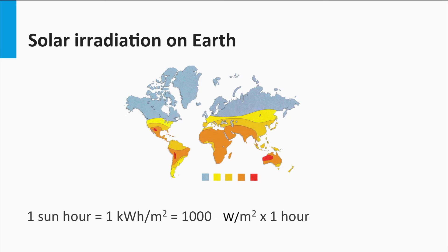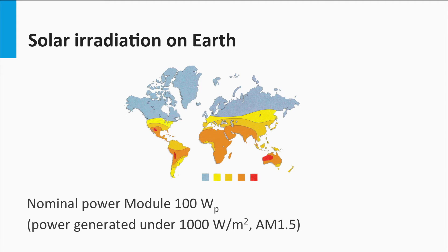One sun hour means an Earth's surface is exposed for one hour to standard test conditions irradiance of 1000 watts per square meter. This is a handy unit because the performance of solar modules is quantified under standard test conditions. If a module has a power of 100 watt peak, it means that the module delivers 100 watts under AM 1.5 solar irradiance of 1000 watts per square meter. The term 'peak' means the maximum power a solar module can deliver under standard test conditions.